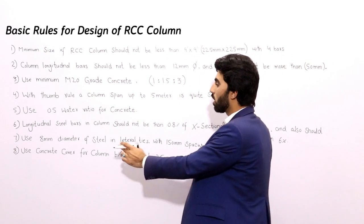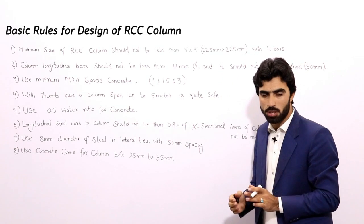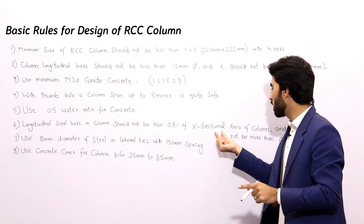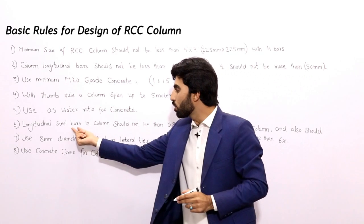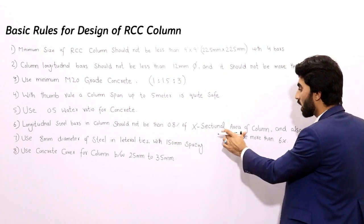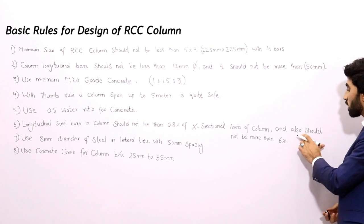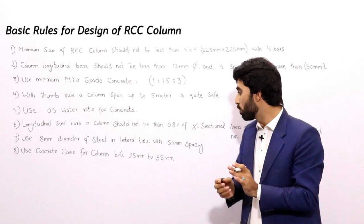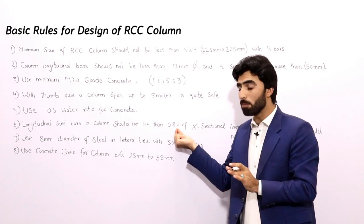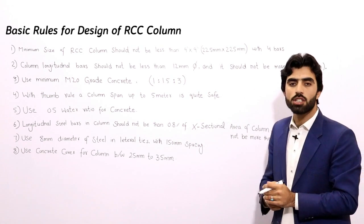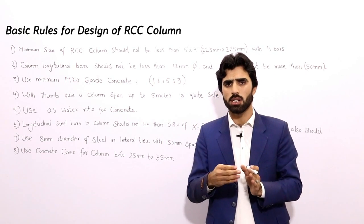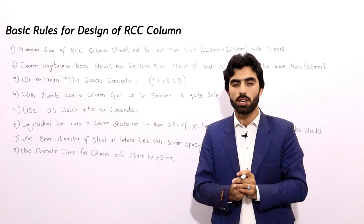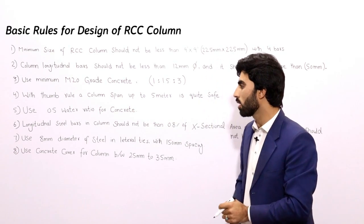The sixth rule: longitudinal steel bars in a column should not be less than 0.8% of the column's cross-sectional area, and should not be more than 6% of its cross-sectional area. So the steel quantity must be between 0.8% minimum and 6% maximum. This is a very commonly asked interview question for civil engineering students.